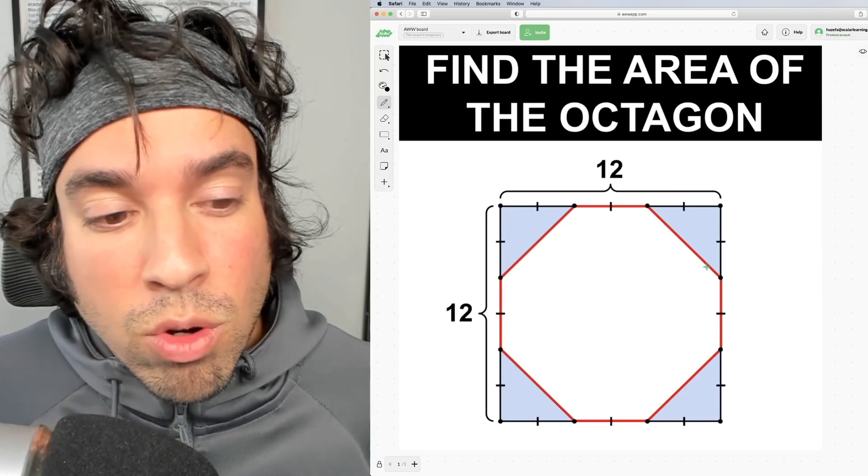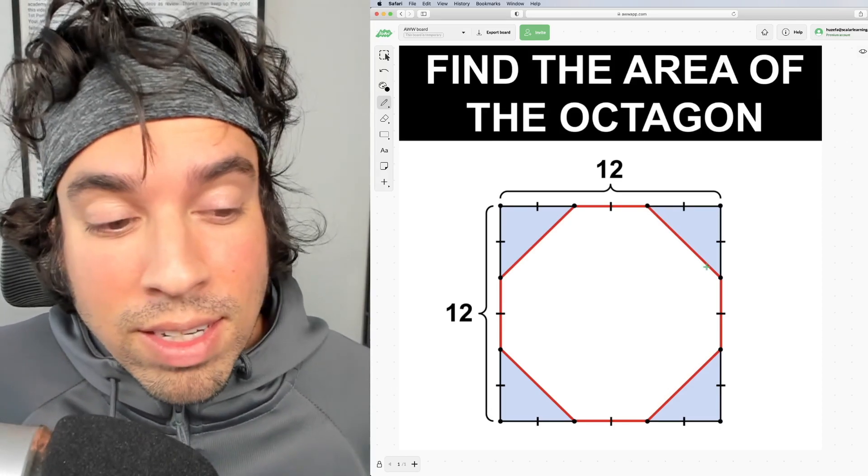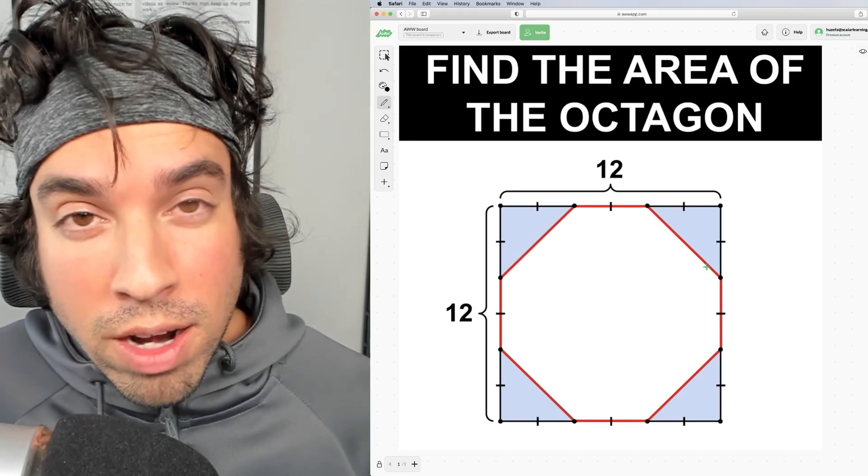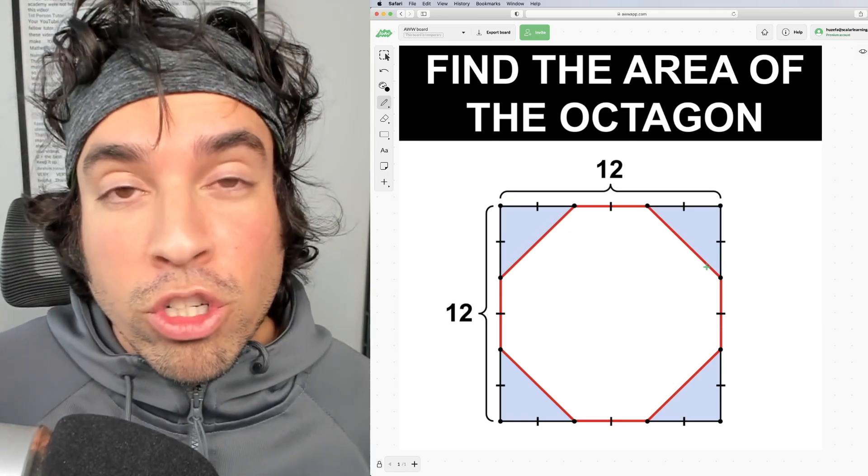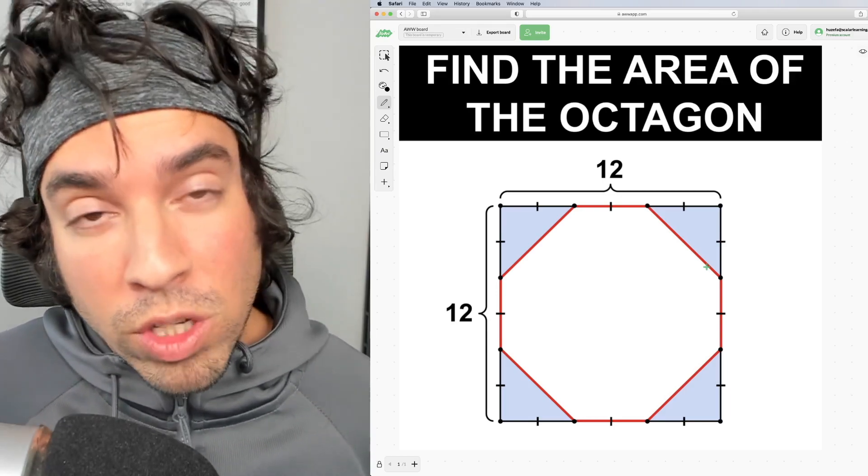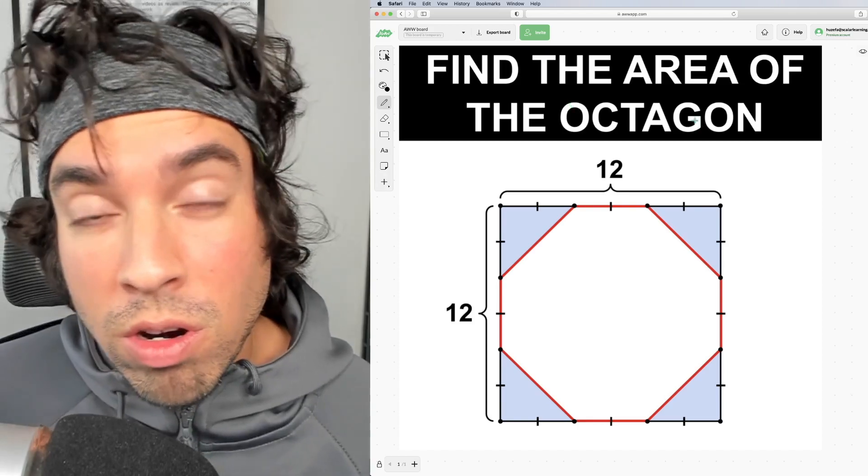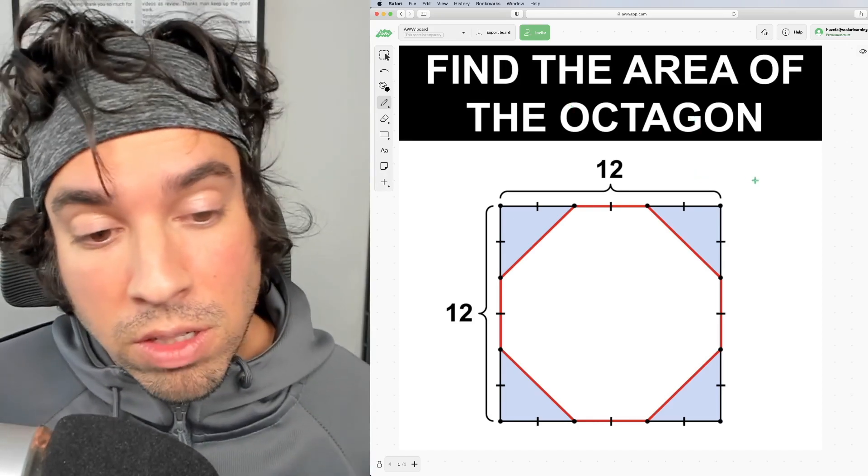The first thing you want to take note of when you look at a problem like this is that the octagon is really a square with four different triangles cut out from it. Our starting point is: what is the area of the original square before we cut out those four blue triangles, which are all right triangles?